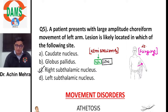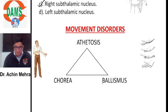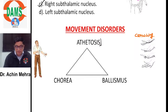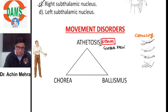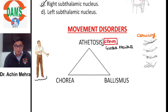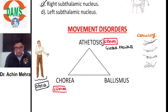Quick recap on movement disorders: ballismus is a flinging movement. Athetosis is a crawling movement with lesion in the globus pallidus of the basal ganglia. Chorea is a semi-purposeful dance-like movement occurring due to a lesion in the caudate nucleus.